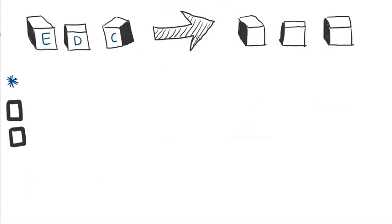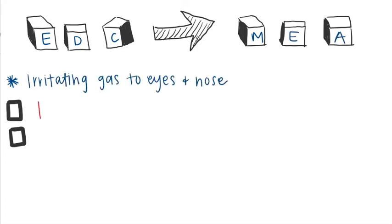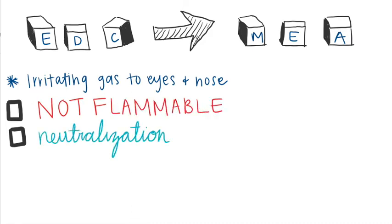After the analysis, the company decided to switch the primary reactant from EDC to monoethanolamine, MEA. The hazards associated with MEA are that it is a gas which can irritate the eyes and nose. However, MEA is not flammable and does not produce hydrogen chloride when reacted with ammonia.